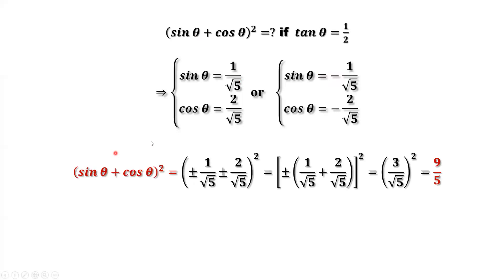We are ready to plug in those results into this formula. Sine theta plus cosine theta, squared. If we replace sine theta with the positive sign, we should use the positive sign for cosine. If we use negative, we should use negative. We can factor the sign — positive or negative — outside. The inside is a sum, and squaring makes the sign not matter.